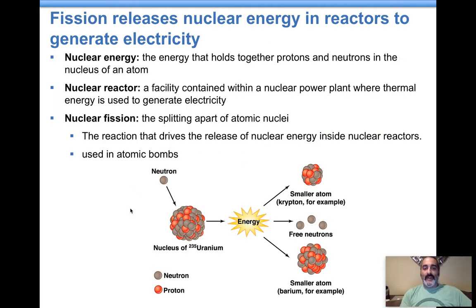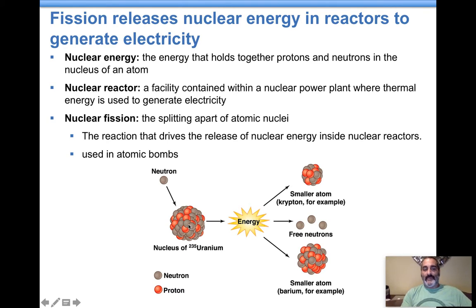So what is nuclear energy? If you look at this uranium atom, there are protons and neutrons. This is the nucleus of a uranium atom — the orange things are protons, the brownish-purple things are neutrons. These are held together very tightly, and when you get them to break apart from each other, a lot of energy is released. Nuclear energy is the energy that holds together the protons and neutrons in the nucleus of an atom.